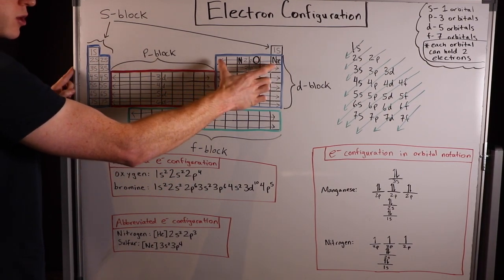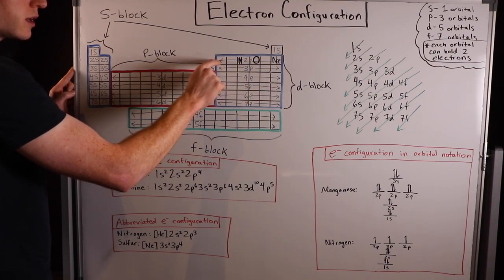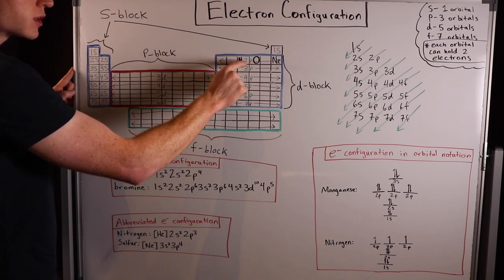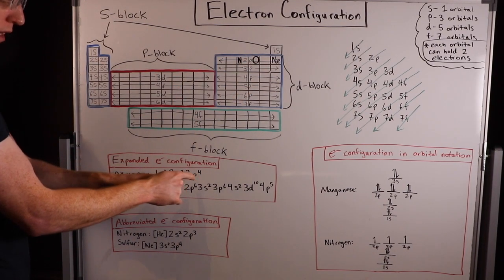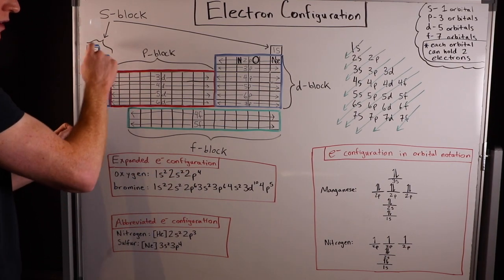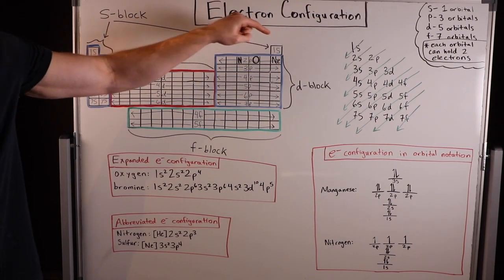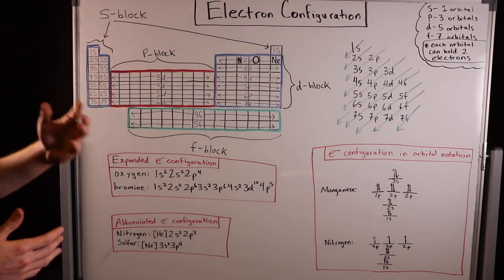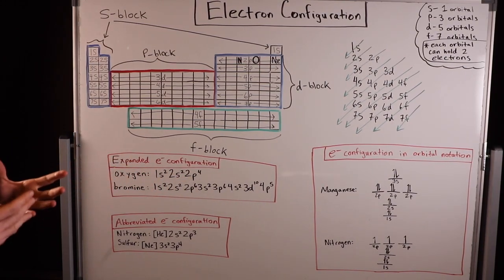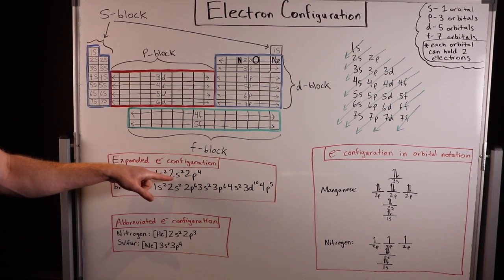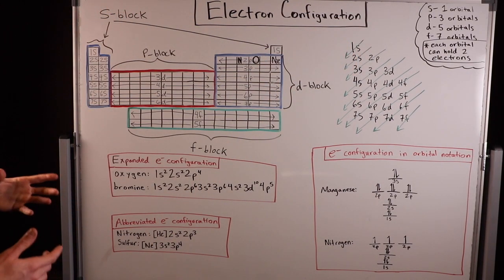Then we move to the right, so now we're in 2p. So 2p, one electron, 2, 3, 4 to get to oxygen. So 2p4. You're really just recording how many electrons you had to get to your element, because each element that goes by accumulates one additional electron. This notation simply describes how they're placed into their orbitals. You notice we're following this general pattern here.